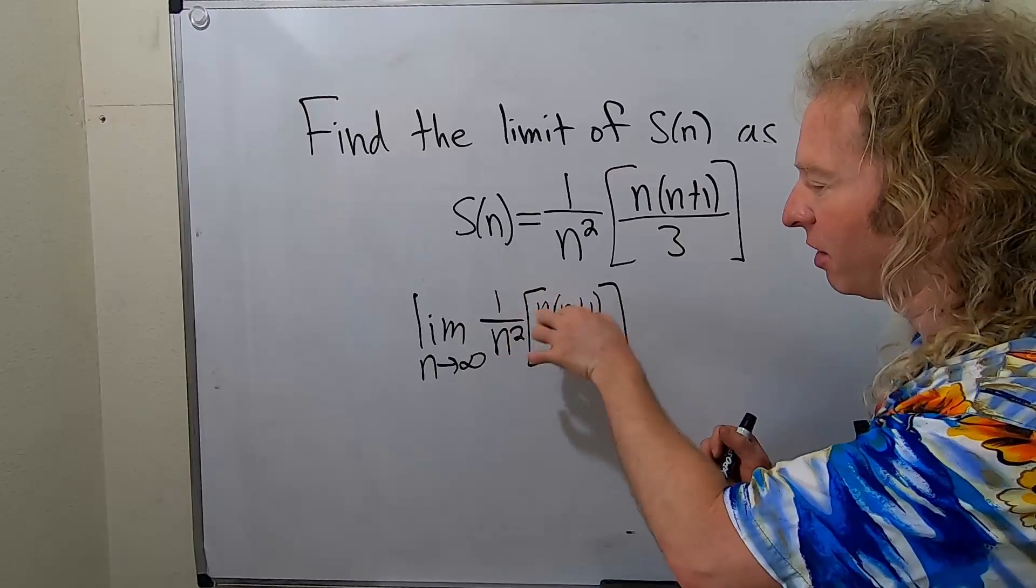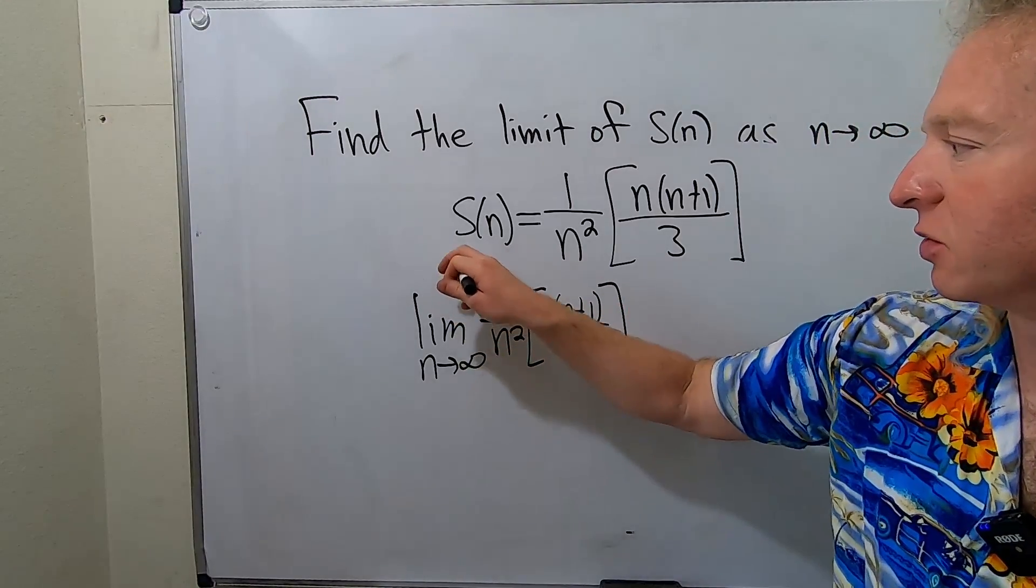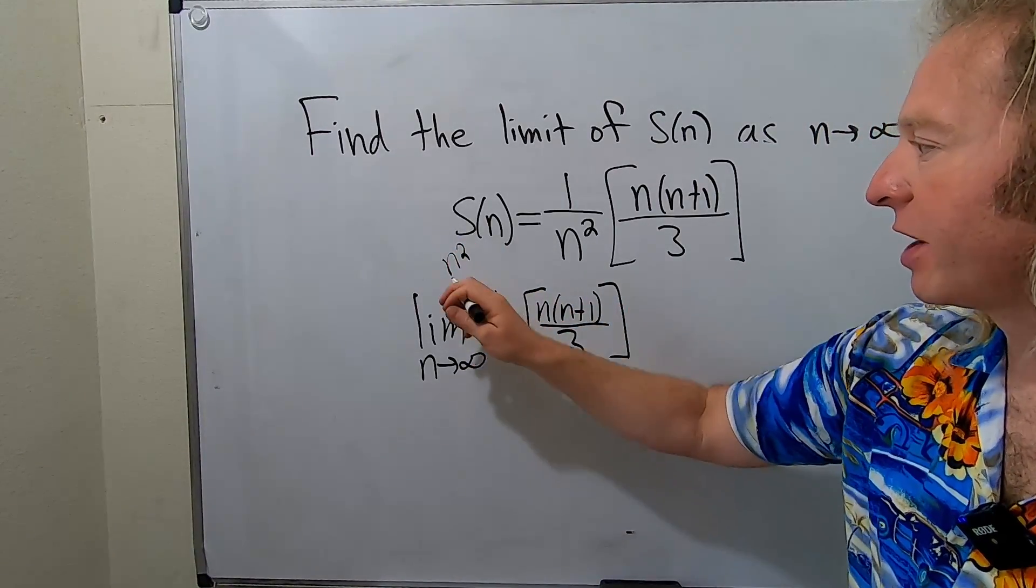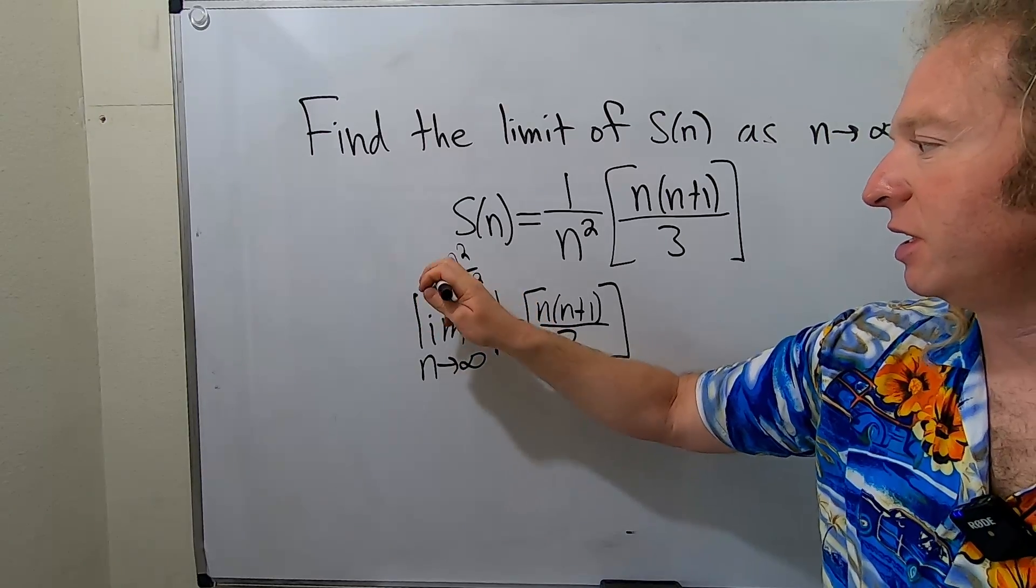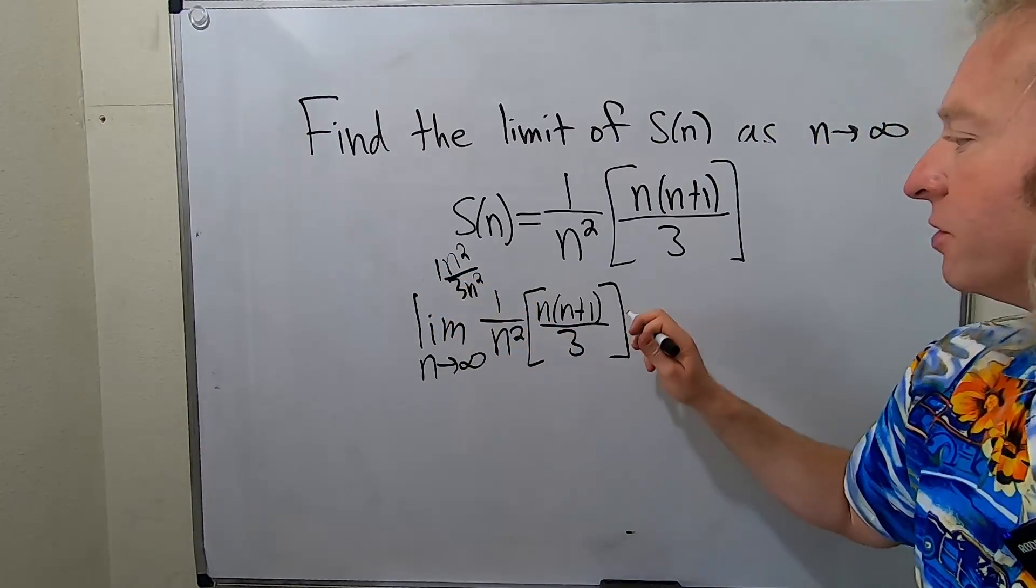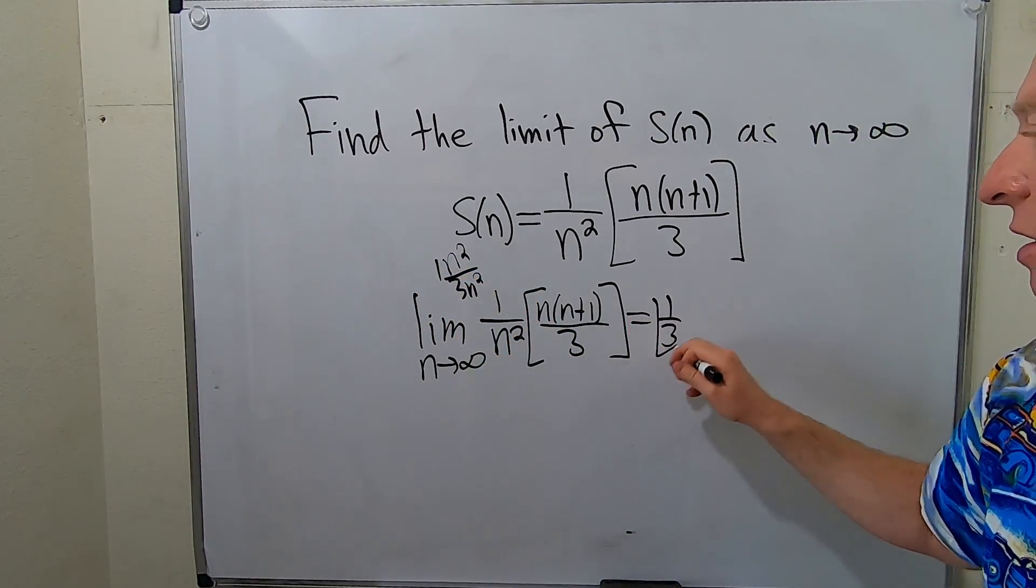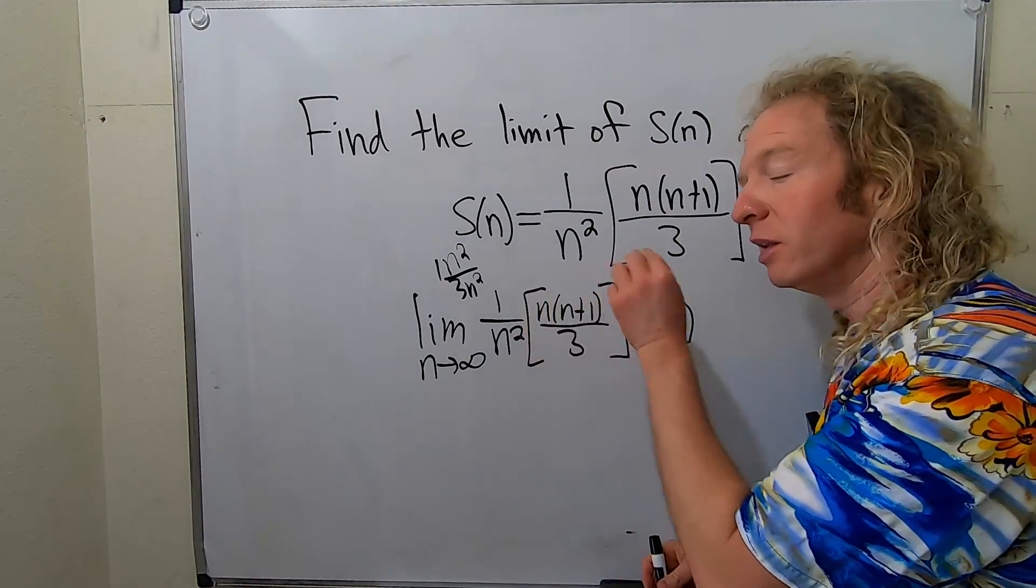If you multiply this out up top, the highest degree term is going to be n squared. On the bottom, the highest degree term is 3n squared. And so basically it's just this number over this number. So it would just be 1 over 3 and that would be the answer. So you just look at the leading coefficients.